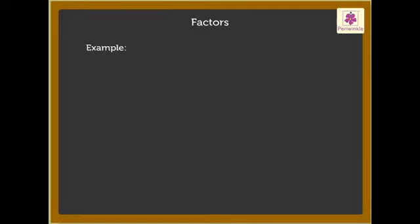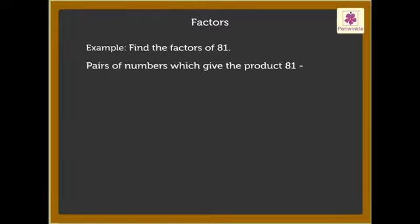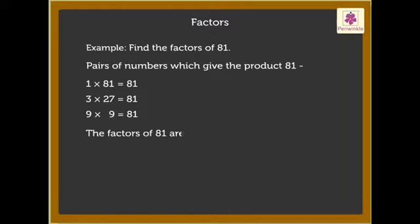Let us solve one more example. Find the factors of 81. The pairs of numbers which give the product 81 are 1 into 81 is equal to 81. Thus, the factors of 81 are 1, 3, 9, 27 and 81 as each of these numbers divides 81 exactly. Did you notice we counted the repeated factors only once?